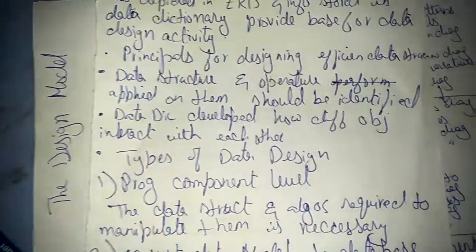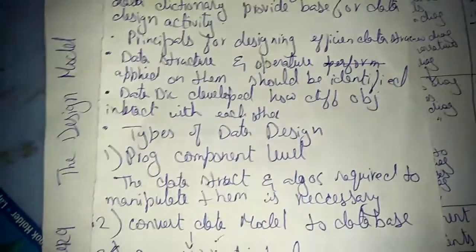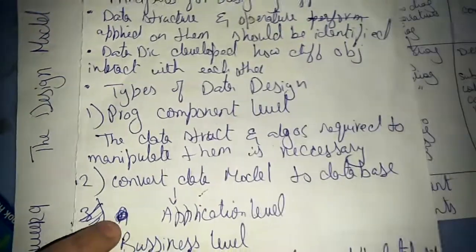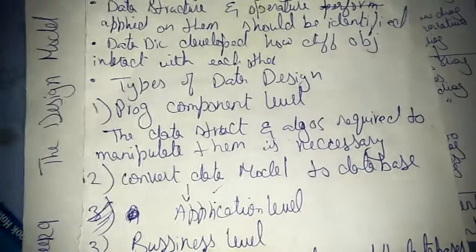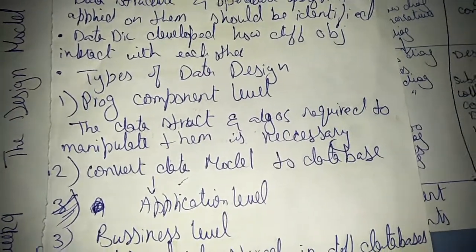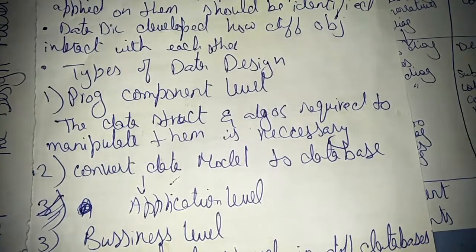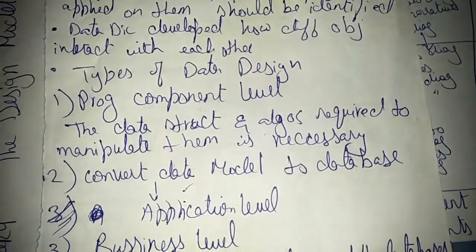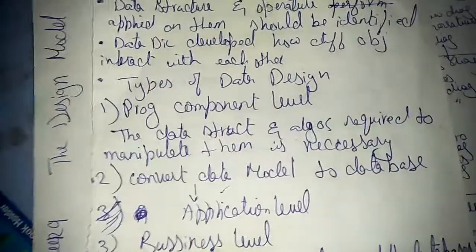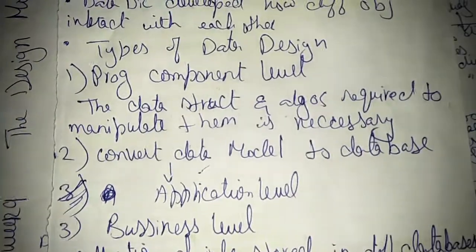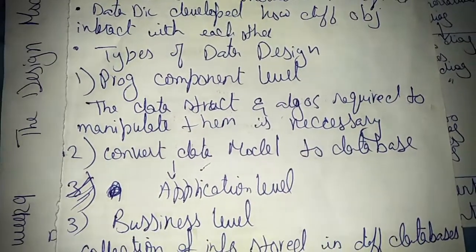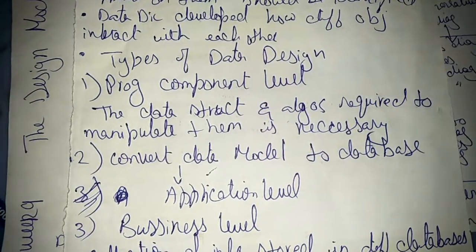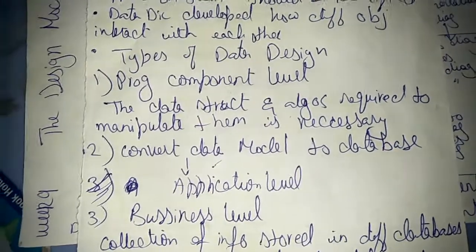There are types of data design. At the program component level, data structures and algorithms required to manipulate them are necessary. At the application level, the data model is converted to a database, which is done using ERD.